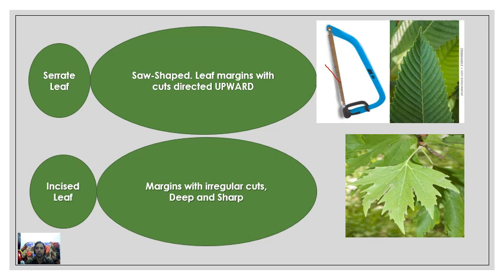Next is the serrate leaf. Think of a saw — this leaf has produced margins that point upward in the shape of saw teeth. Such a leaf is called a serrate leaf.